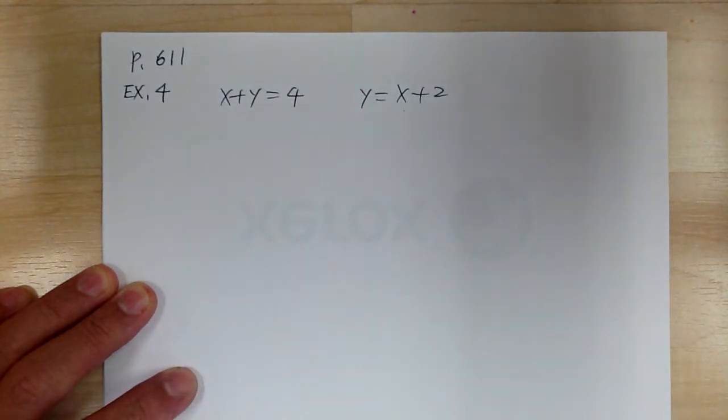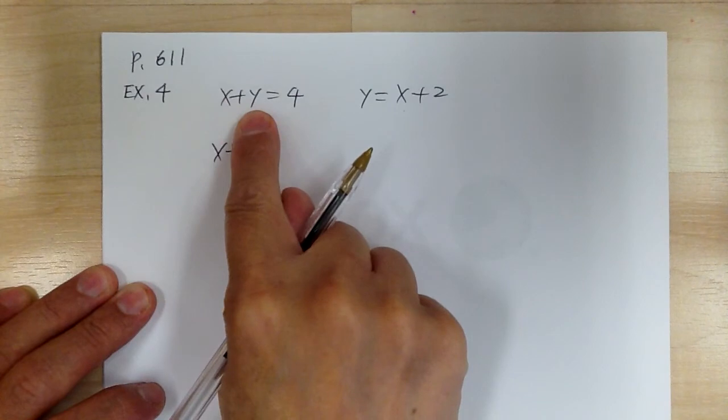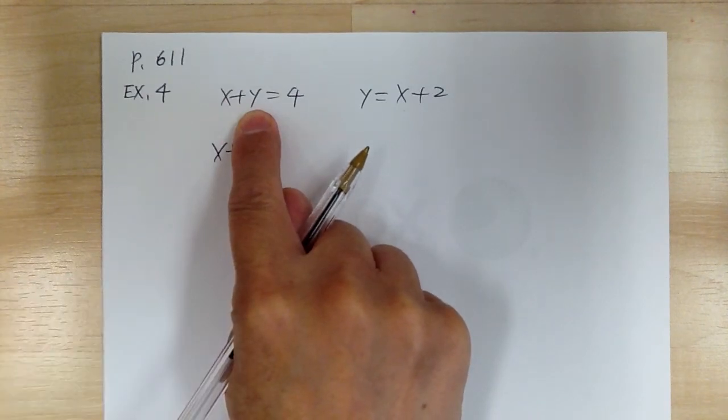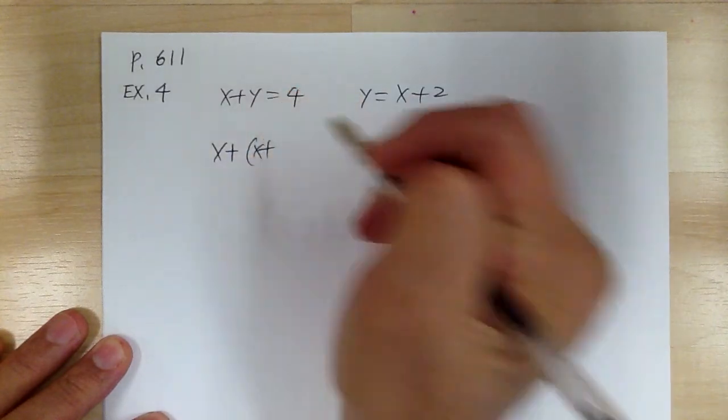The concept of substitution is like making a change. You have one dollar bill and you're going to exchange it for four quarters - that's the same idea. So you're going to change this y into x plus 2.